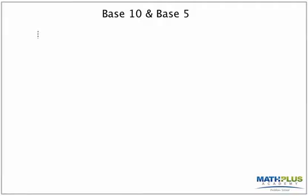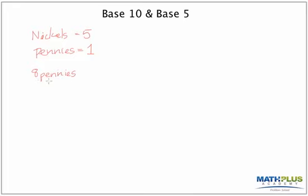A nice concrete model to think about base five is pennies and nickels, because nickels are worth five and pennies are worth one. So if I have eight pennies and I want to convert to base five, the rule is: trade out for as many nickels as you can — find the groups of five. This is going to be one nickel and three pennies. In shorthand I write '1 3' with a little subscript five to show it's base five. So that's one five and three, which makes eight.